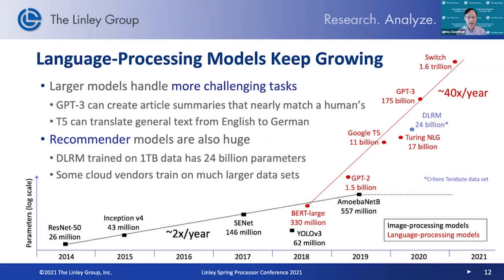Another application for large models is recommender models. For example, if you go on Amazon to buy something, it will recommend different products you might be interested in. If you go on Facebook, it recommends another article or ad that might interest you. These models can also have billions of parameters and be a big challenge to train and execute. This desire for larger, more powerful, more accurate models is really driving the AI industry to deliver more powerful and more scalable chips.